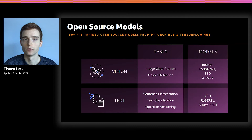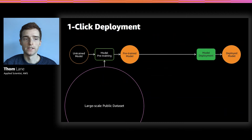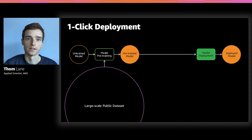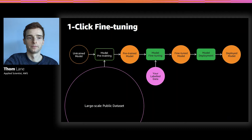Moving across to the text domain, we have a collection of Transformer models that includes the likes of BERT, RoBERTa, and DistilBERT. They can be used for a variety of natural language processing tasks such as sentence classification, text classification, and question answering. These can be deployed with a single click. We can take a pre-trained model that's been trained on a large public dataset such as ImageNet, with a million images and 1,000 classes, and deploy it to a SageMaker endpoint. But if you have your own dataset, you can fine-tune these pre-trained models to your particular use case — with a single click to fine-tune and another single click to deploy that model.